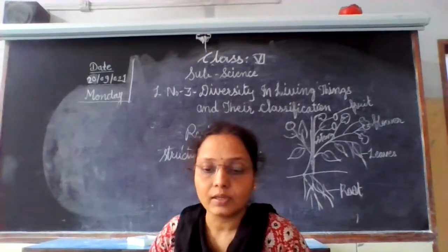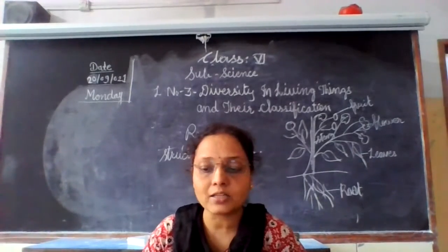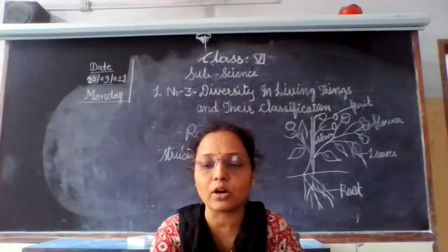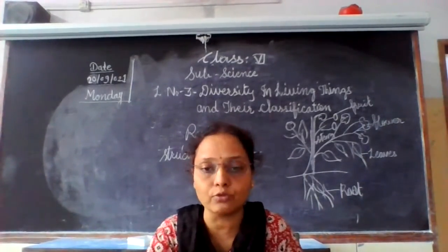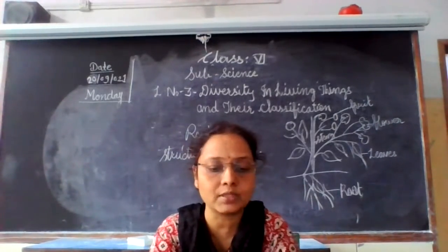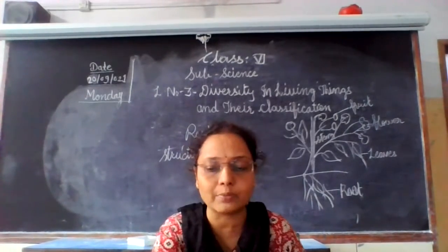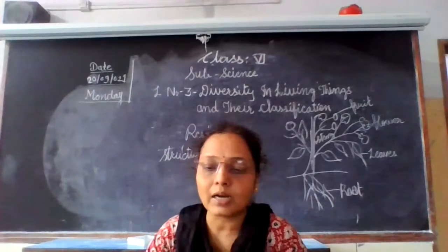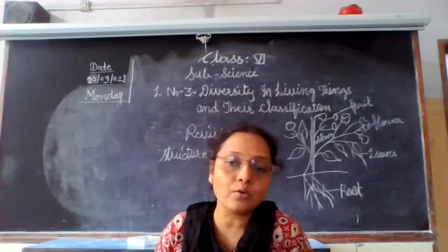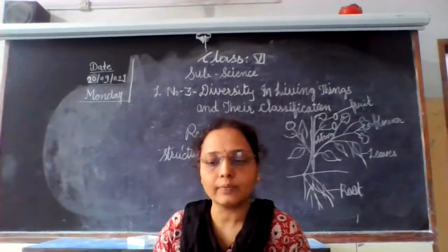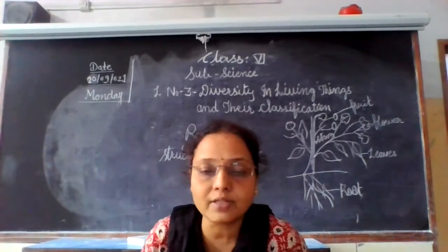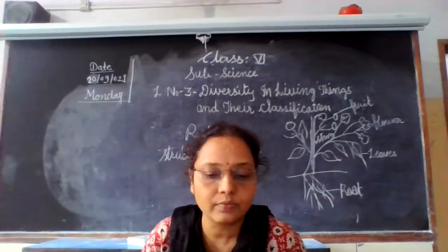Then, the leaf. The leaf is flat and plays an important role in the production of food. Leaves are mainly of two types: simple leaves and compound leaves.